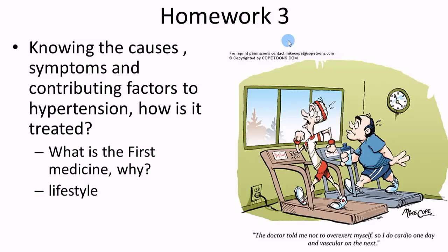Homework number three: we've talked about causes, symptoms, and contributing factors to hypertension — now look up how it's treated. What's the first medicine usually tried? What's another medicine used later and why? What lifestyle changes are recommended? Think about this: if you're obese and jump on a treadmill, your blood pressure skyrockets. So how does exercise ultimately help reduce hypertension? Think through that and answer that question.